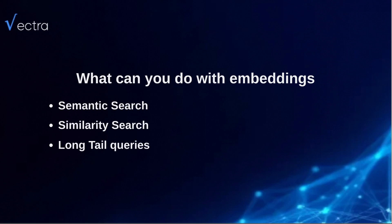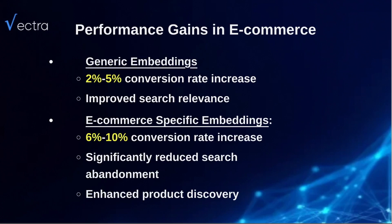For people in the e-commerce realm, one of the things they care most about is conversion. I can show you some numbers we've seen out in the wild. If you use generic embeddings — which is already a good start — I would recommend everyone to start right away with the most easily accessible embeddings: just embed your product index and try it out. You could probably get a two to five percent conversion rate increase. That's straightforward because you'll all of a sudden be getting the misspellings, the synonyms, the long tail queries with very little effort.